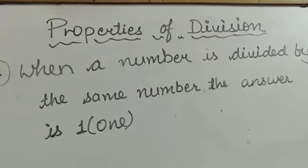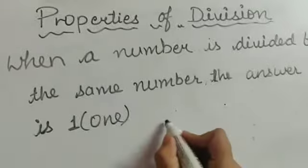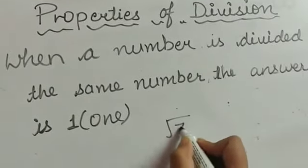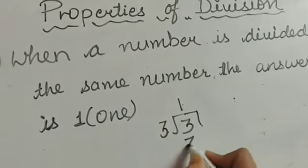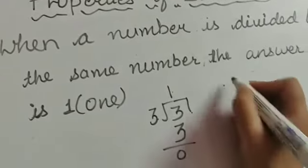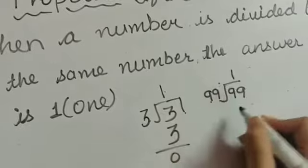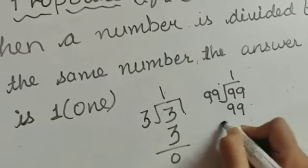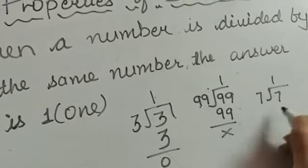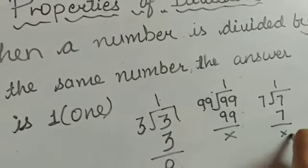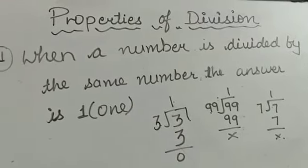Properties of division. Property 1: When a number is divided by the same number, the answer is 1. If 3 is divided by 3, the answer will be 1, because 3 ones are 3. If the number is 99 divided by 99, then 99 ones are 99, so the answer is 1. So if any number is divided by the same number, the answer is 1.